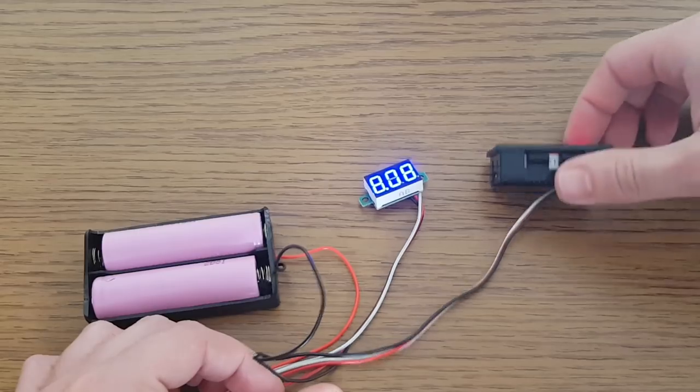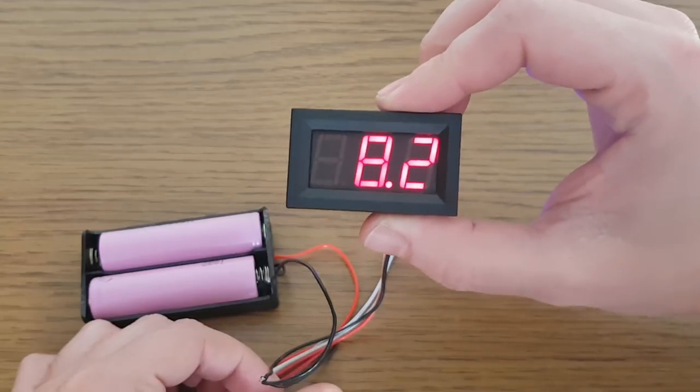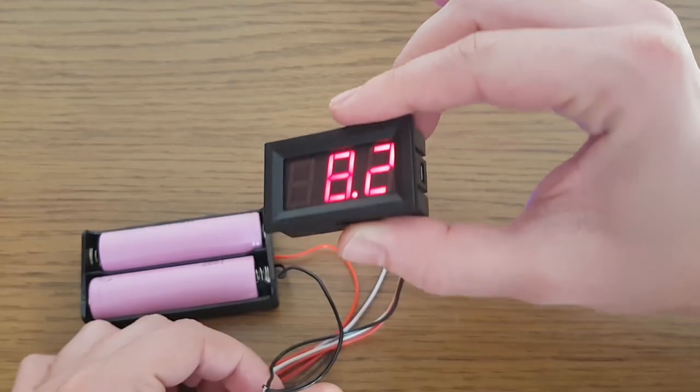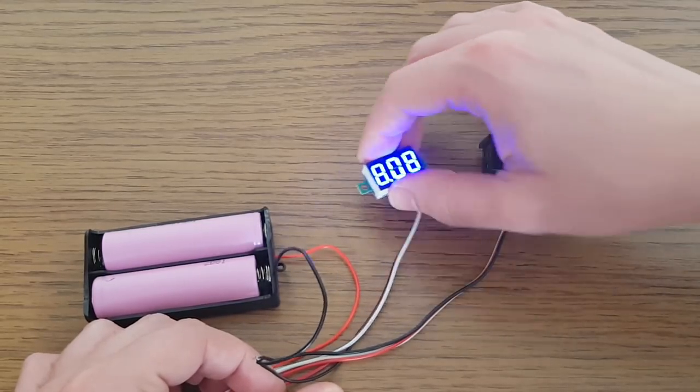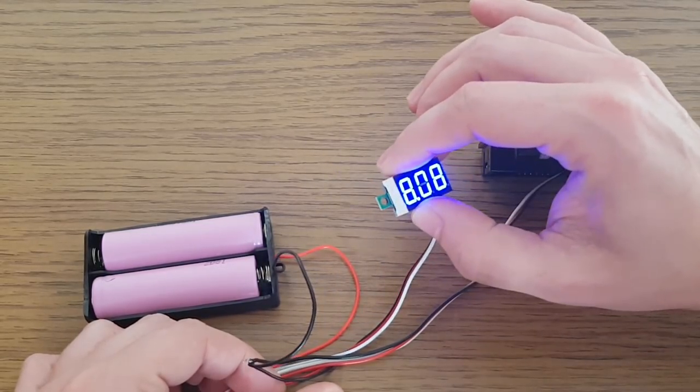At first I wanted to use this bigger panel voltmeter, but then I've realized it's not that precise. Below 10 volts it has only one decimal place. The little one has an accuracy with two decimal places.